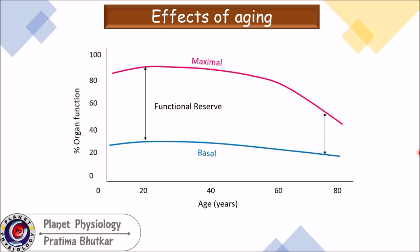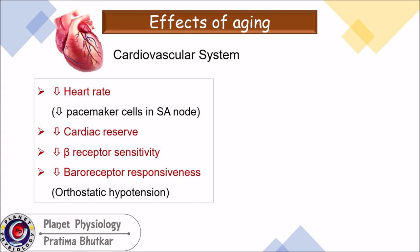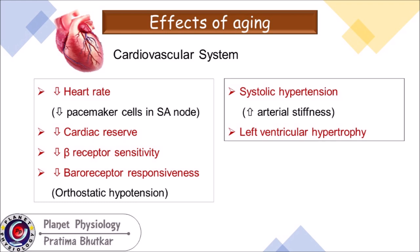Starting with the cardiovascular system, advancing age causes a decrease in basal heart rate due to a decrease in pacemaker cells in the SA node, decreased cardiac reserve, and decreased beta-receptor sensitivity. There is also decreased baroreceptor responsiveness, which explains orthostatic hypotension in the elderly population. With advancing age, systolic hypertension develops, mainly due to increased arterial stiffness, and the sustained increase in afterload causes left ventricular hypertrophy.